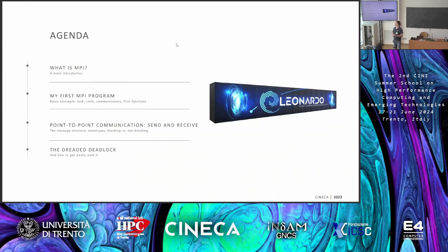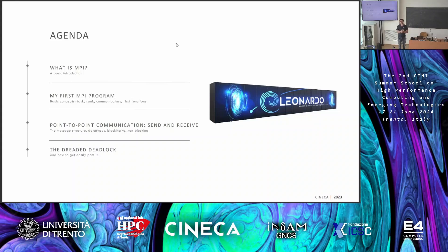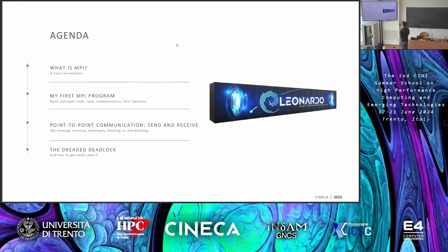Basic introduction: basic concepts and the very first MPI program, which is the standard hello world written with this paradigm. At least in this part of the presentation, we will cover the most standard and used way to make CPUs communicate data, which is point-to-point communication — when a particular processor wants to communicate with another particular processor, from A to B. If we have time, I will show you something about collective communicators. For now, we start with the basics: point-to-point send and receive.